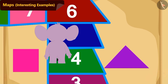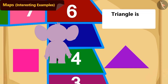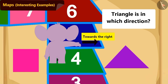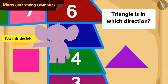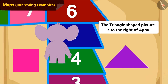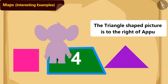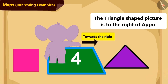Children, can you tell whether the triangular-shaped picture is to Appu's right or to his left? Absolutely correct! The triangular-shaped picture is at Appu's right side.